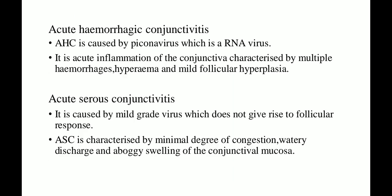The first type is acute hemorrhagic conjunctivitis. It is caused by picornavirus, which is an RNA virus. It is an acute inflammation of the conjunctiva characterized by multiple hemorrhages, hyperemia, and mild follicular hyperplasia.